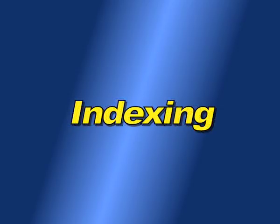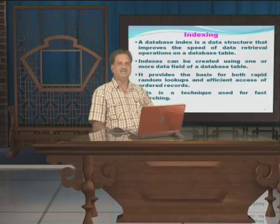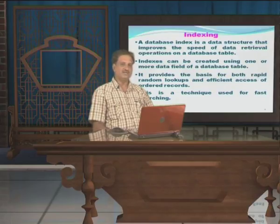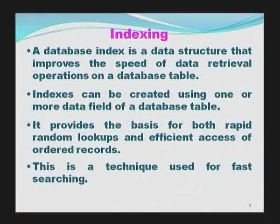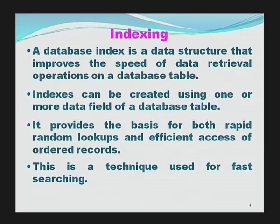Another option is indexing. Indexing also puts the database into a specific order — ascending or descending. The key feature of indexing is that it really improves searching performance. If the database table is indexed, generating reports or queries will be very fast. A database index is a data structure that improves the speed of data retrieval operations on a database table. Indexes can be created using one or more data fields, providing the basis for rapid random lookups and efficient access of ordered records.